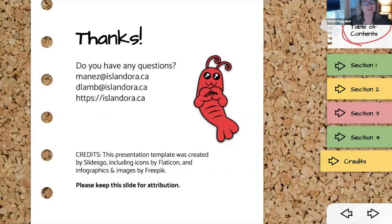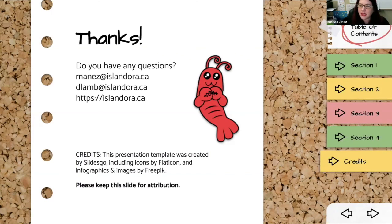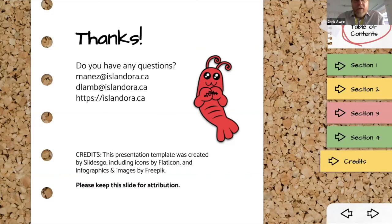A question came in about the UPEI research data management platform — specifically whether it supports collaborative workflow and ontologies for different disciplines through the curation process. The answer is that collaboration workflow is definitely supported, but on the ontology piece I'd have to check or talk with someone on the platform. There is a website describing the work available, and that link will be shared in the chat.